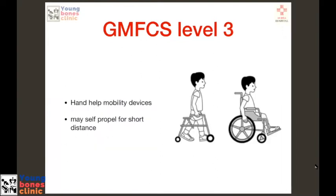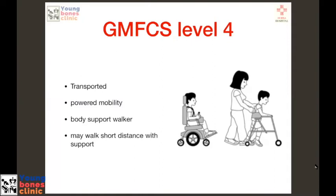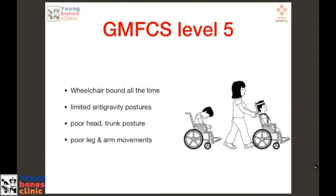In Level 3, kids usually need handheld mobility devices and may self-propel for short distances. In Level 4, kids are wheelchair-bound but can use wheelchairs themselves; they usually need a caretaker and may walk short distances with orthotic support and walking aids. In Level 5, kids are totally non-ambulatory, have to be transported on a wheelchair carried by a caretaker, and cannot operate the wheelchair. They have poor leg and arm movements, poor head control, and poorly functioning anti-gravity muscles — they need orthotic supports and a CP chair to keep them safe.